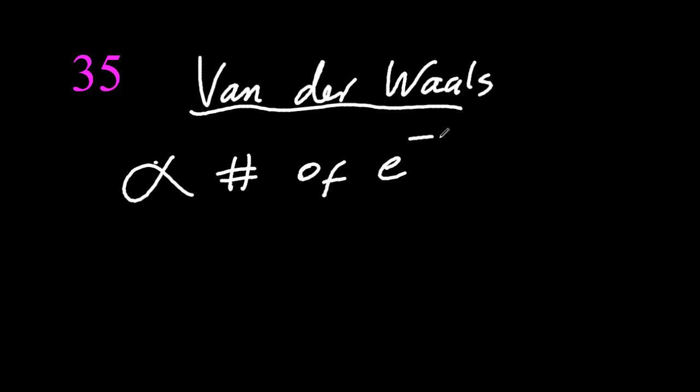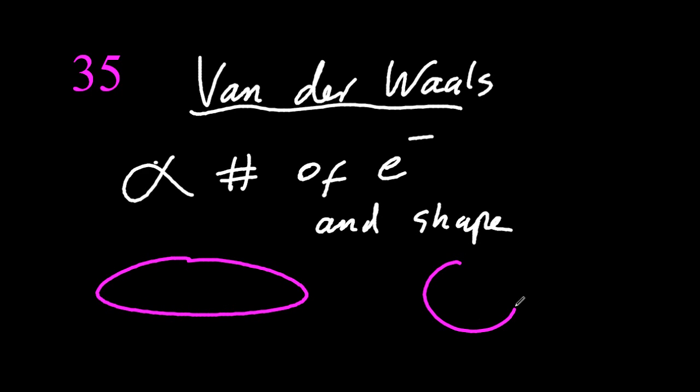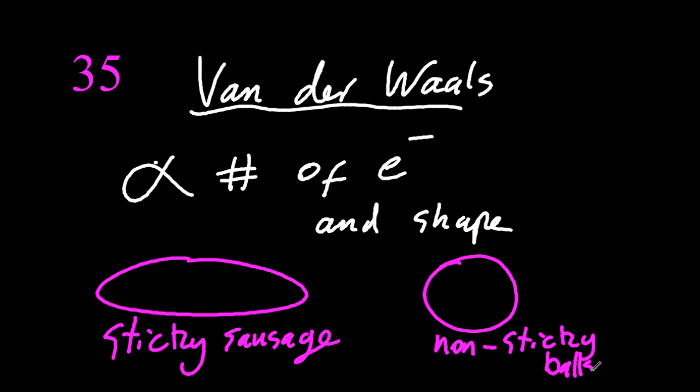Van der Waals bonding is proportional to the number of electrons, and also the shape, if it's a long shape or if it's a sphere. If it's a long shape, think of sticky sausage. High surface area, much stickier. And if it's a spherical shape, think of it as non-sticky balls.